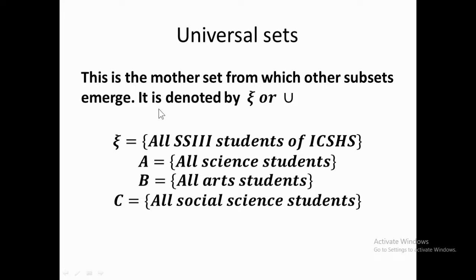For example, if I have set A, set B, and set C, and set A is the universal set while B and C are subsets, it means that the elements of set B and set C are also found inside set A. That makes set A the universal set of set B and set C.